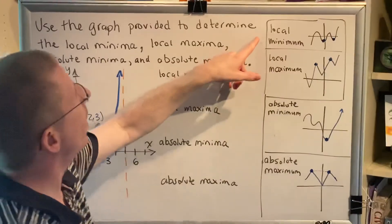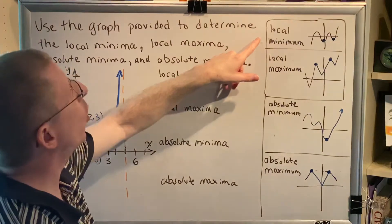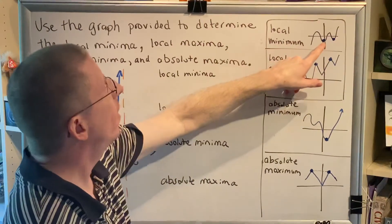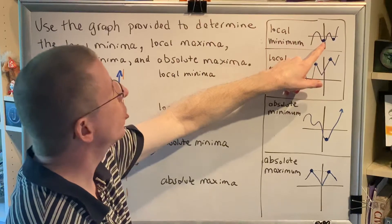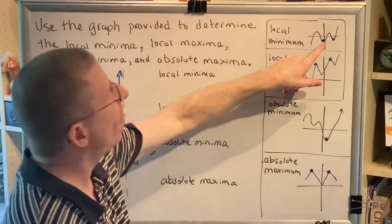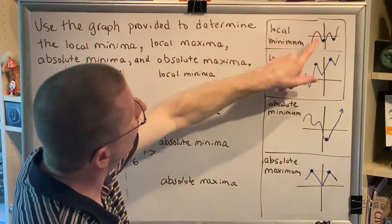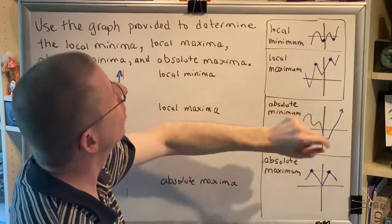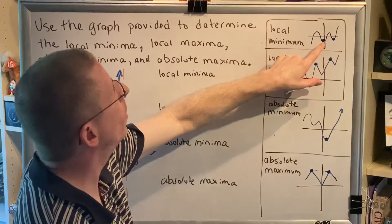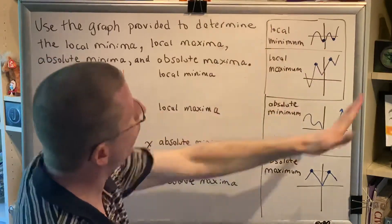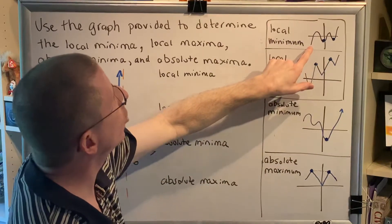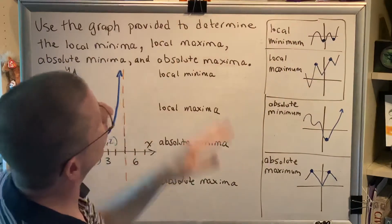Here I have a small graph showing a local minimum. A local minimum is a point that is the smallest of all points nearby it, and there have to be some points to the left of it and some points to the right of it. Notice that this is at the bottom of the valley and is a local minimum, but this endpoint is not because there are no points to the left of it.